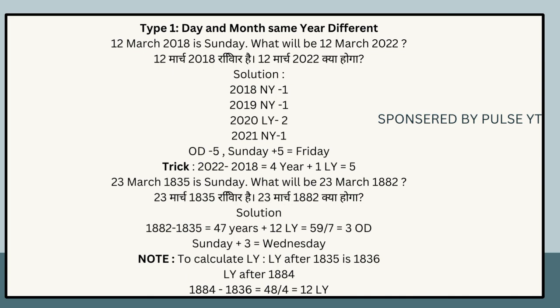Example: The 23rd of March 1835 is Sunday; what will be the 23rd of March 1882? Solution: 1882 − 1835 = 47 years + 12 leap years = 59 total odd days. 59 ÷ 7 = remainder 3 odd days. Sunday + 3 = Wednesday.